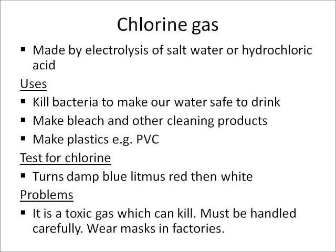How do we know chlorine gas is chlorine gas? If I put some damp blue litmus paper above chlorine gas, the litmus paper will turn red and then white because chlorine gas is acidic. The problem with chlorine gas is it's a toxic gas, which means that it can actually kill people, and it was used to do this during the First World War.